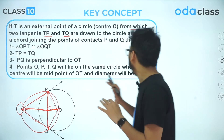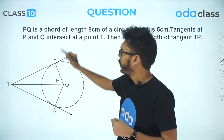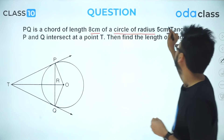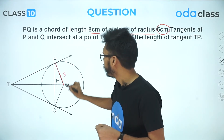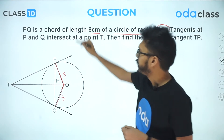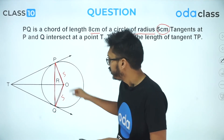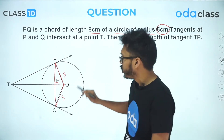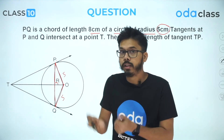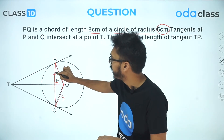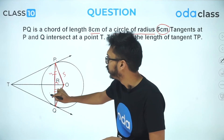Now let's look at the first question, which is related to tangents. PQ is a chord of length 8 centimeters of a circle of radius 5 centimeters. So OP = 5 and OQ = 5, and chord PQ has length 8. Since OR is perpendicular to PQ from the previous theorem, PQ gets bisected at R. So PR = RQ = 4.